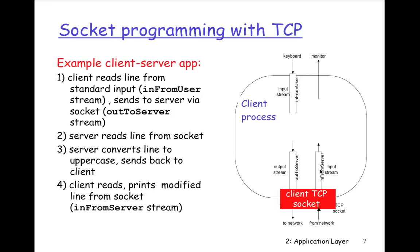In a TCP client-server example, the client reads a line from standard input, sends it to the server via a socket output stream. The server reads a line from the socket, converts it to uppercase, and sends it back to the client. The client reads and prints the modified line from the socket. The diagram shows a keyboard providing input stream, the display or socket going out to another client or server, with data flowing through the TCP client socket to and from the network.